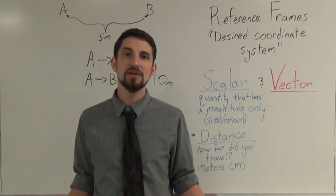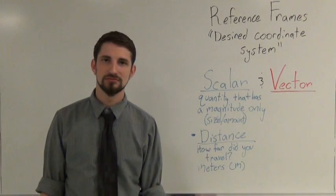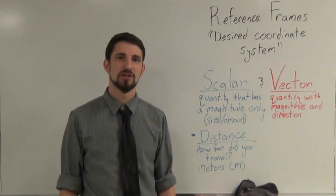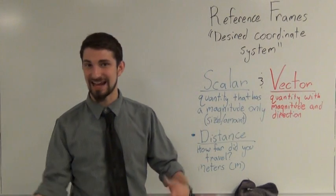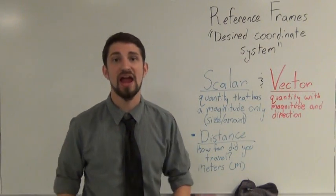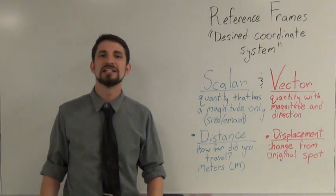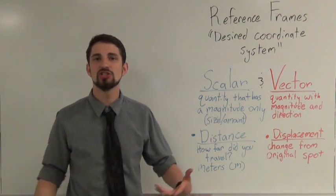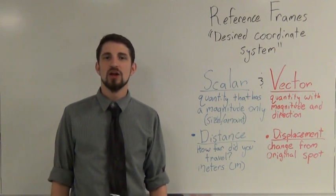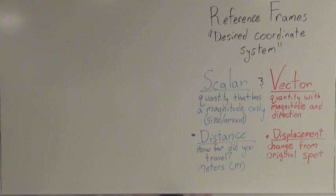There are times where direction does matter. That brings us to a vector. A vector is like a scalar — it has a magnitude — but it also has a direction. That brings us to displacement. Displacement is just how much you change your original position. When something has been displaced, it's been removed from its original spot.